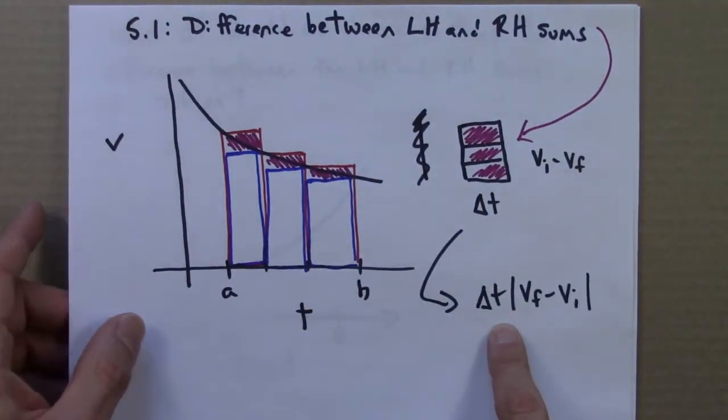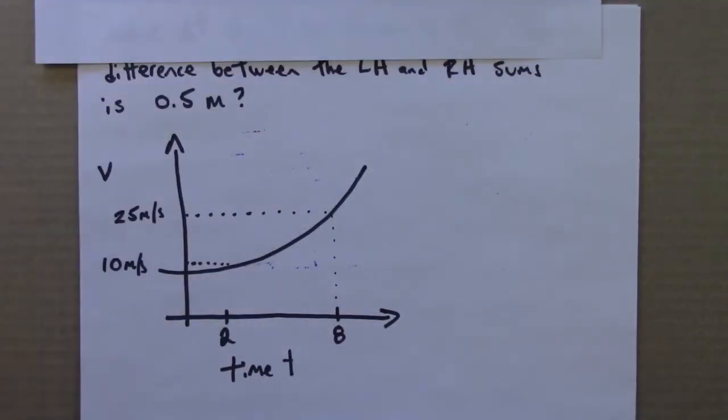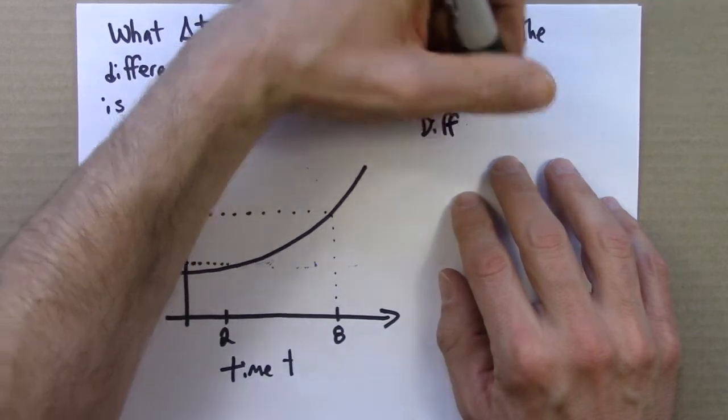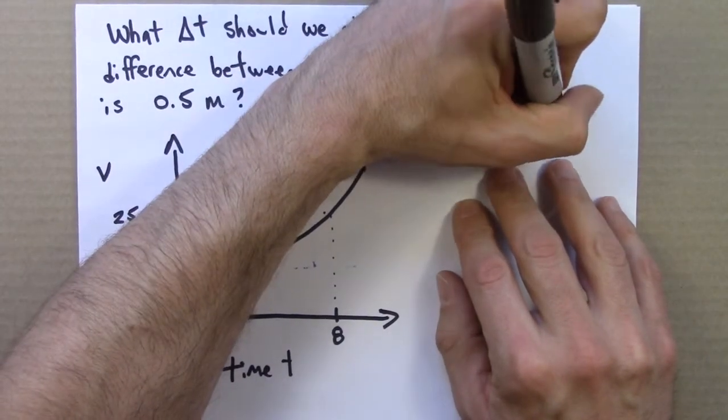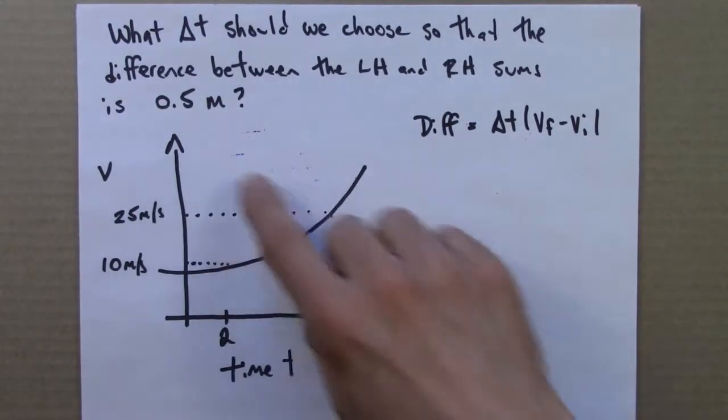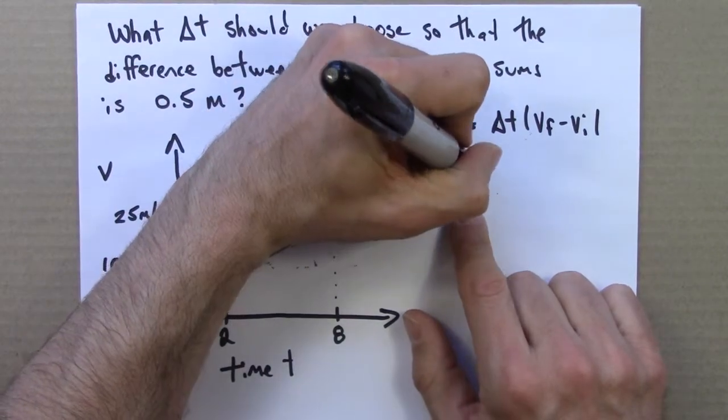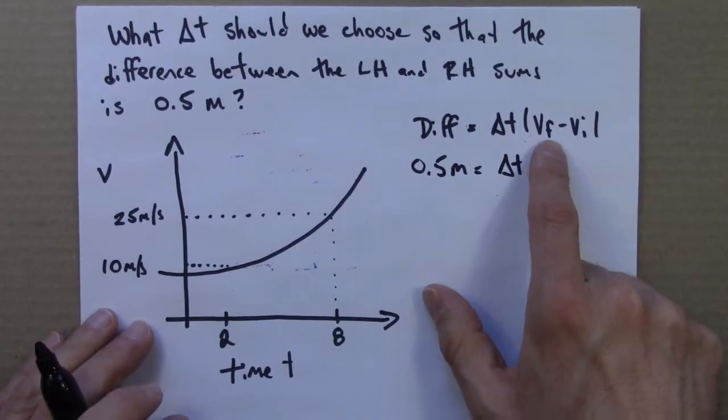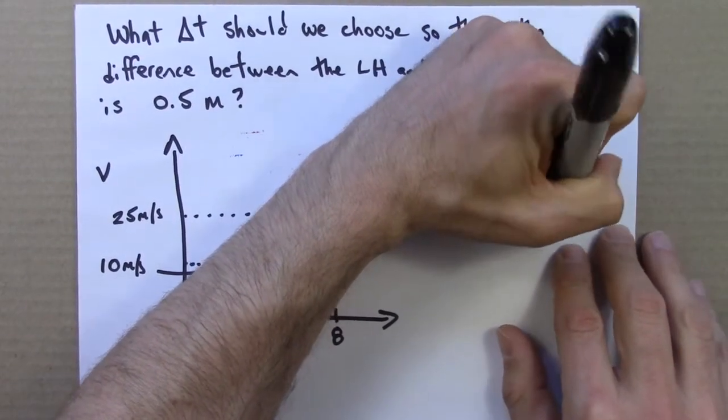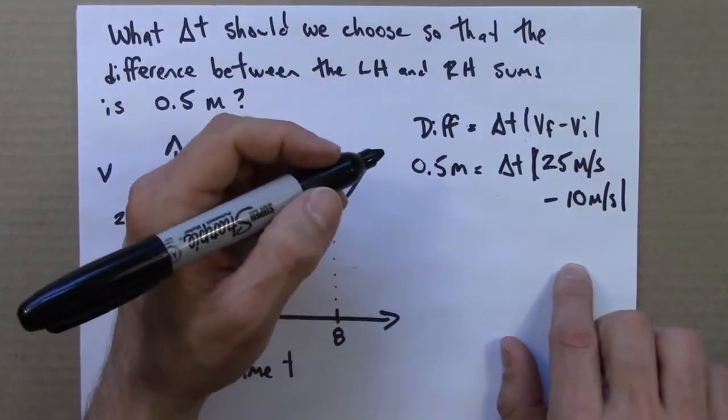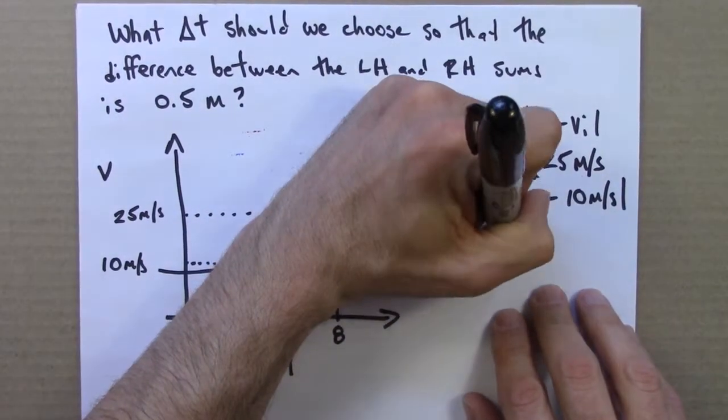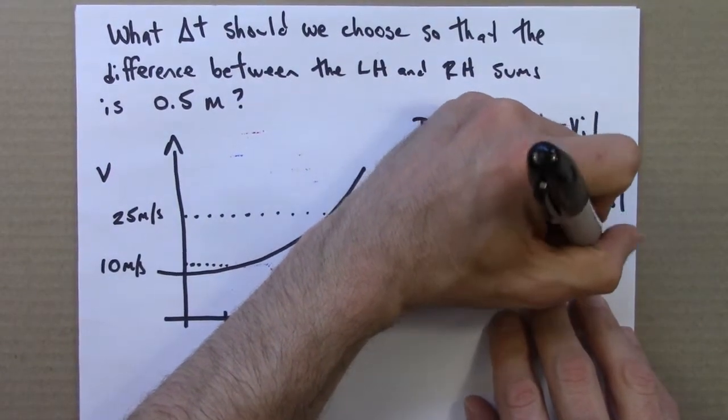The difference is this expression, delta t times the difference in the velocities. So let's do that. So the difference is delta t times |vf minus vi|. And by difference here, I mean difference between the left-hand sums and right-hand sums. And we want that to be half a meter. Delta t we don't know. And then here we've got final minus initial. That's 25 meters per second minus 10 meters per second. 25 minus 10 is 15.